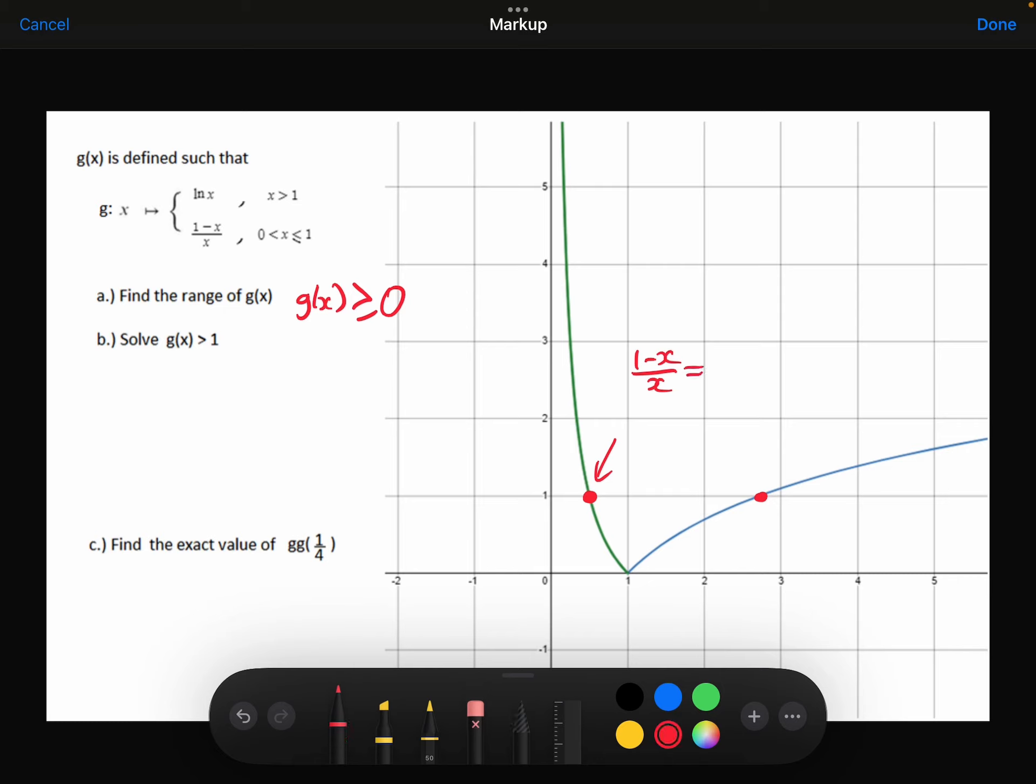So when does that equal 1? Times both sides by x, add x to both sides, and I find that x is 1 half at that point there.